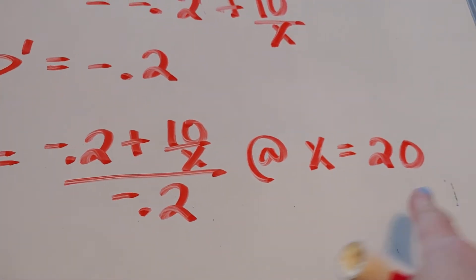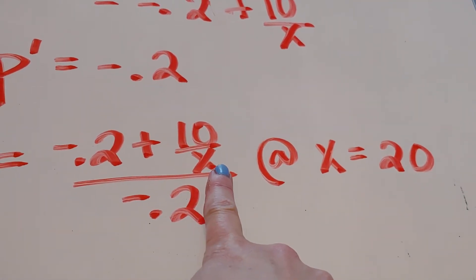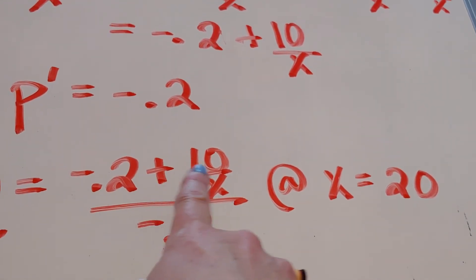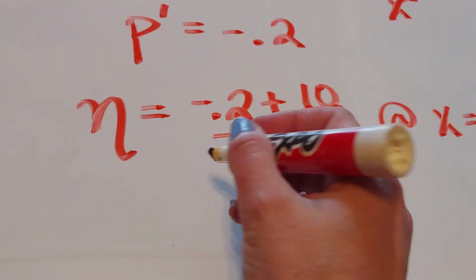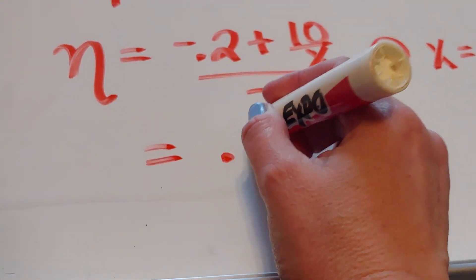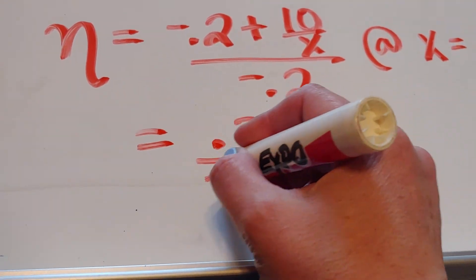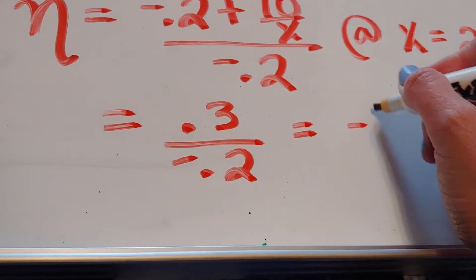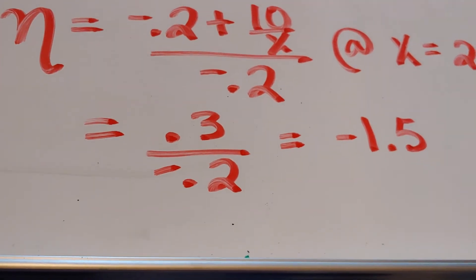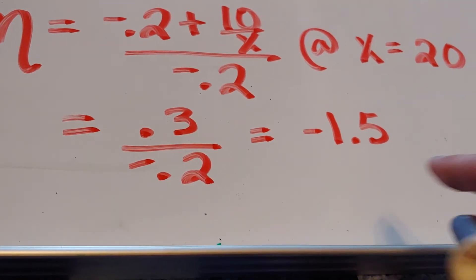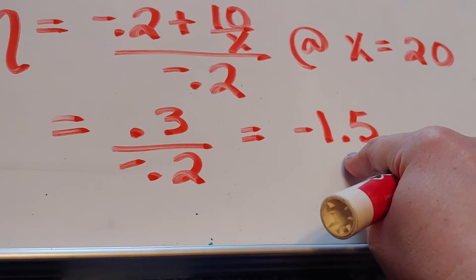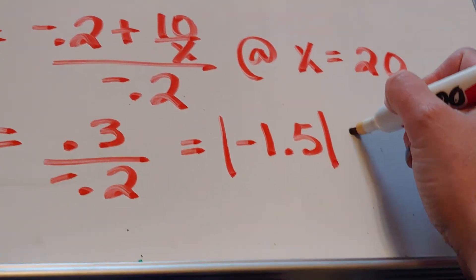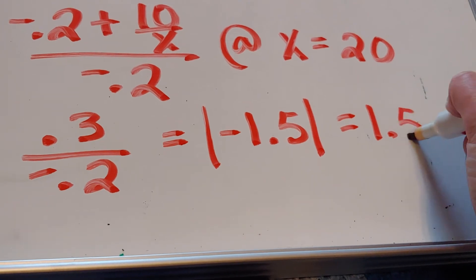So when x is 20, if I plug that in, I'm going to get 10 divided by 20 is 0.5. So negative 0.2 plus 0.5 is 0.3 divided by a negative 0.2, we're going to end up with a negative 1.5. Now what I'm supposed to do with this is I'm supposed to take the absolute value of it. So the absolute value of it will turn into a positive 1.5.